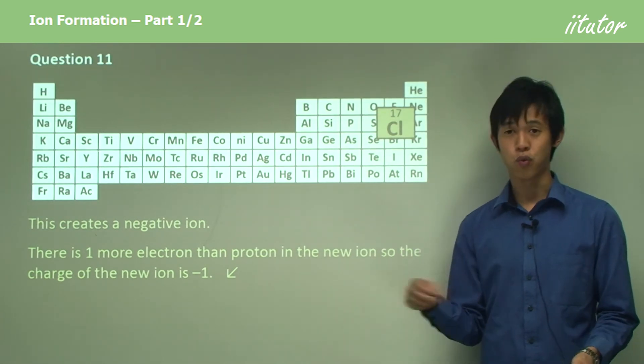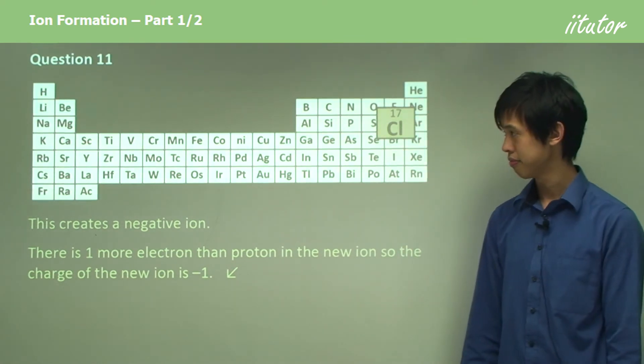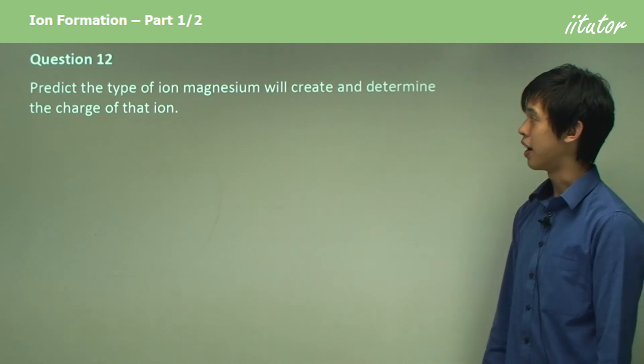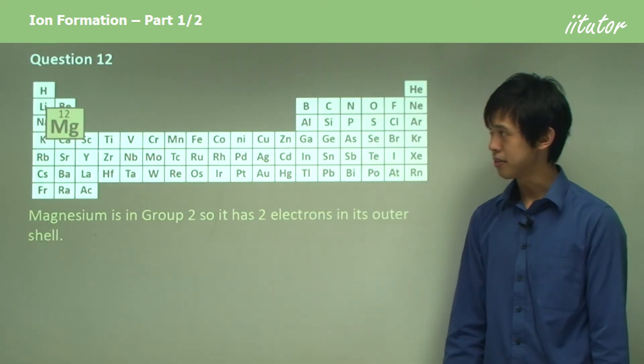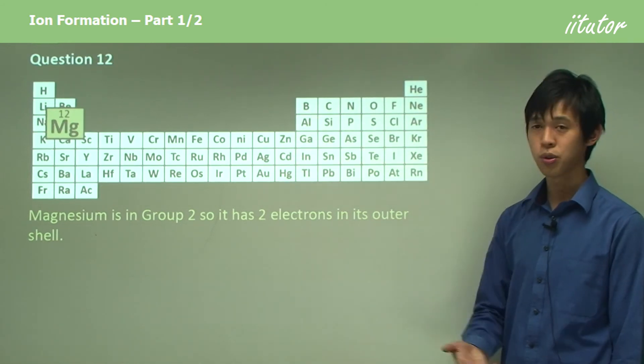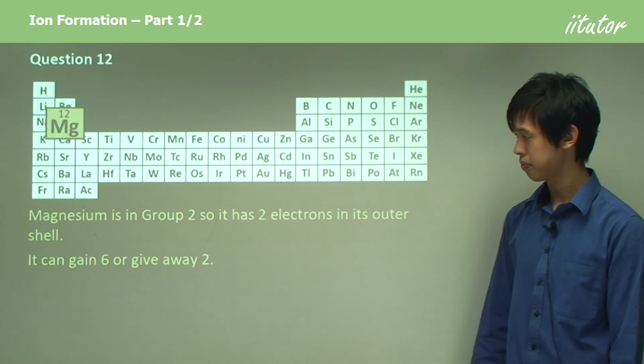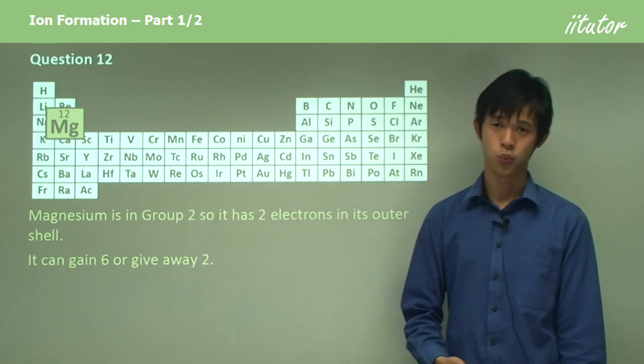So predict the type of ion magnesium will create and determine the charge of that ion. Magnesium is over there in group two, so magnesium has two electrons in its outer shell. Its options are to gain six or give away two.